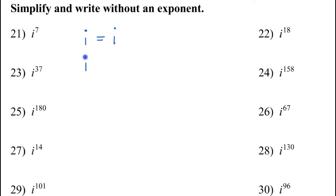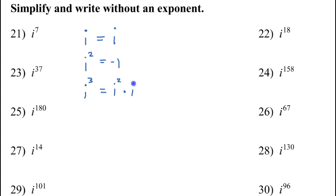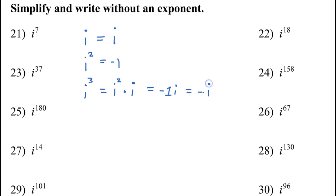i squared is negative 1, really by definition — so just memorize that. Now, i to the third power could be derived from what we have above, because i to the third power can be written as i squared times i. But i squared is negative 1, so this is really negative 1 times i, which is just negative i.